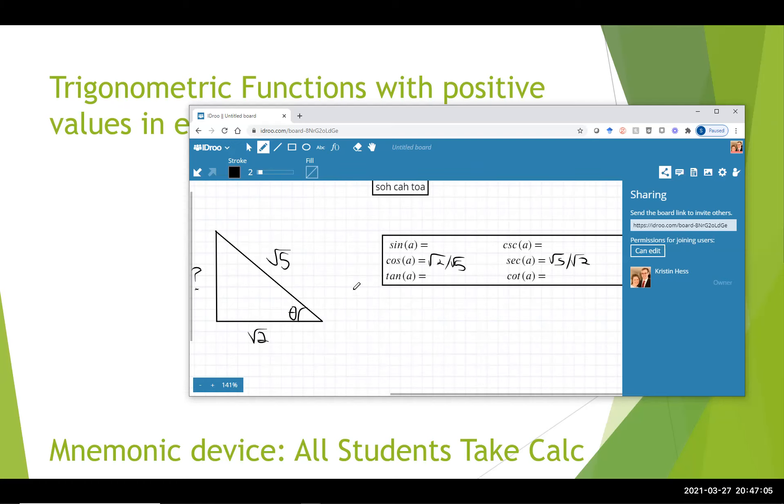So to find the missing side, I'm going to call the missing side x. x squared plus the square root of 2 squared equals the square root of 5 squared. And I'm going to do this algebra.